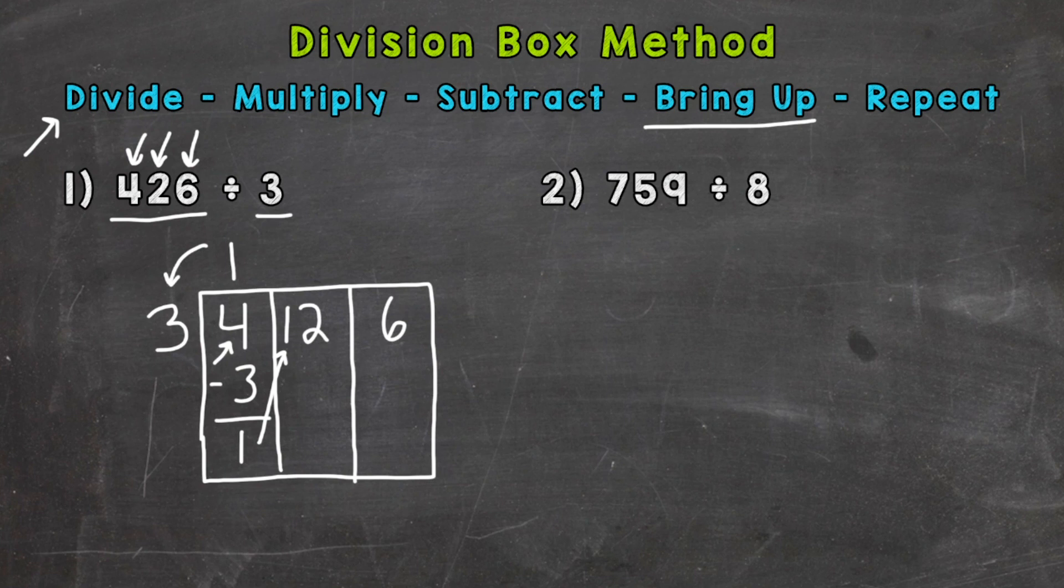So we repeat the process now with that 12. So 12 divided by 3. How many whole groups of 3 out of 12? Well 4. Multiply. 4 times 3 is 12. Subtract. 12 minus 12 is 0. So we bring up our 0.